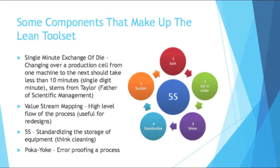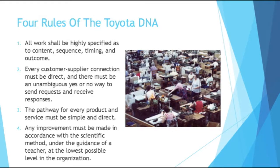So we've talked about how lean manufacturing really stems from the Toyota production system. Here are four rules that make up the Toyota DNA. Rule 1: all work shall be highly specified as to content, sequence, timing, and outcome. This ties in really well with organizational quality control systems — operation standards, standard times, specific job tasks, job details. The more precisely you can define the work, the better you can do it, measure it, and control it.